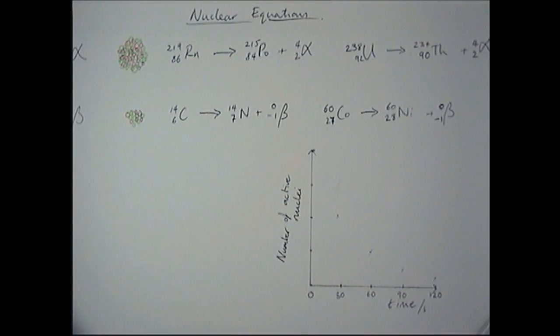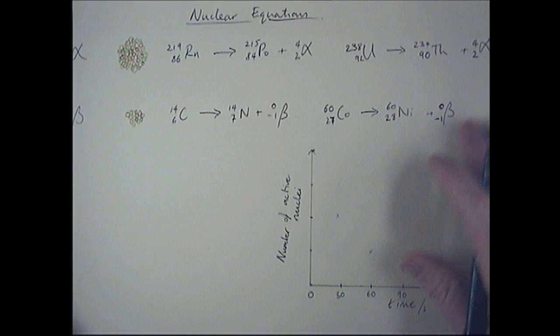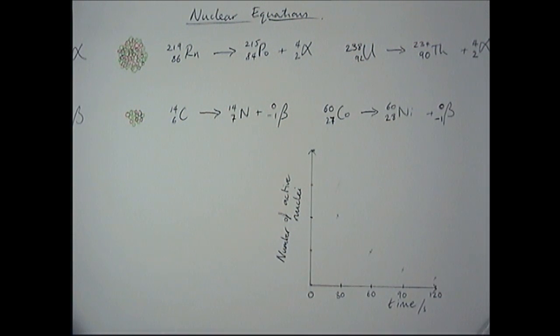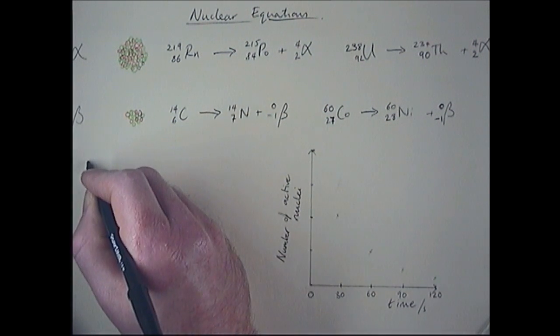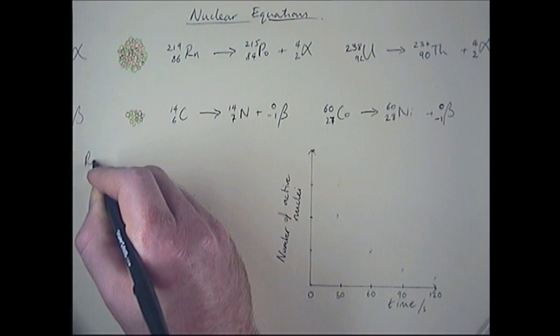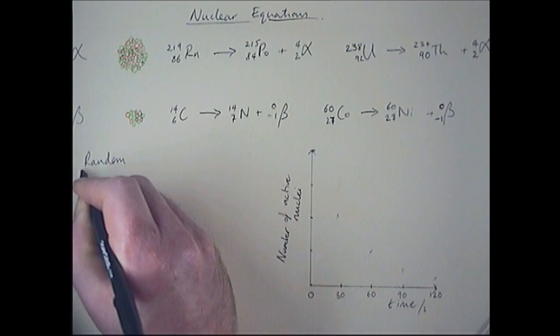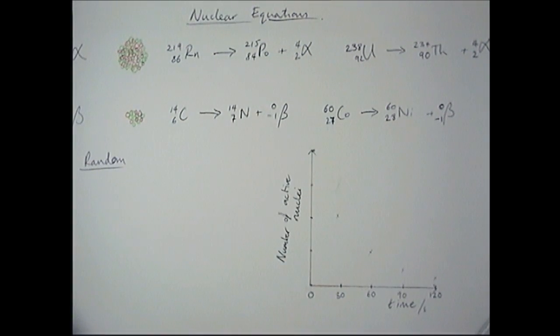There isn't an equation for gamma because gamma normally comes along accompanying one of these other two types of radiation. You need to also be aware that radioactive decay is a random process. Like a random process like rolling a dice, it has a certain probability of occurring. So if there's a high probability of the decay occurring, then you're going to have a more active substance and more radioactive substance.